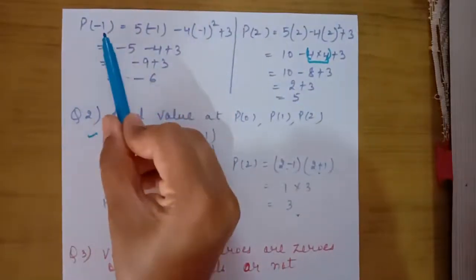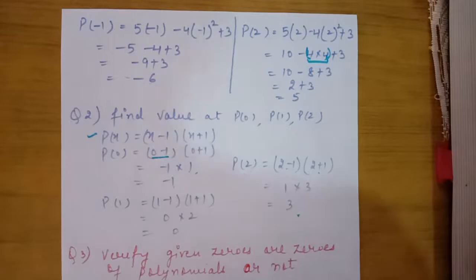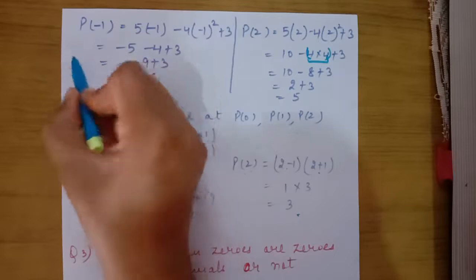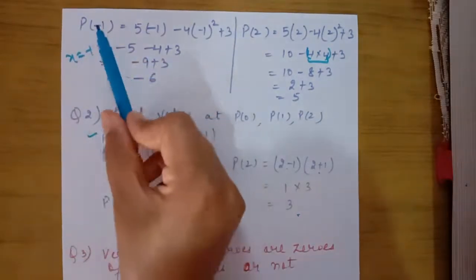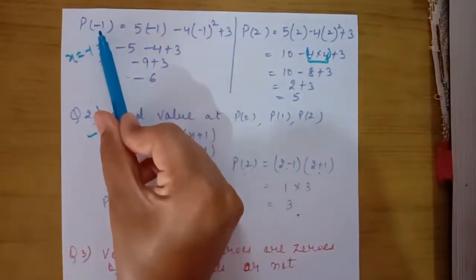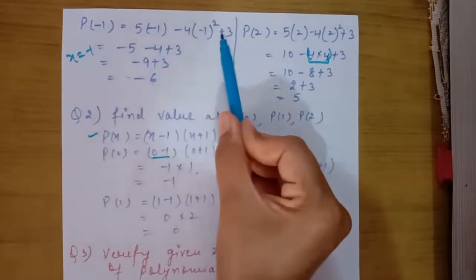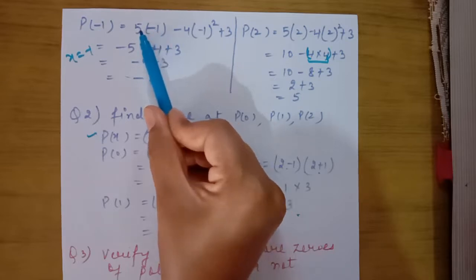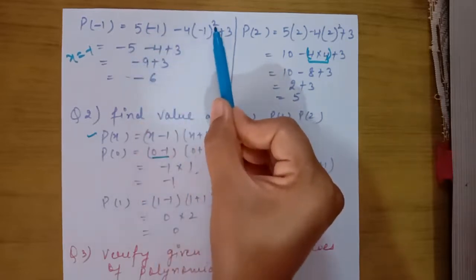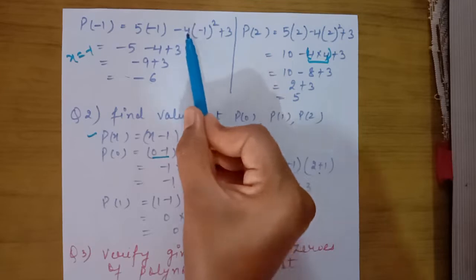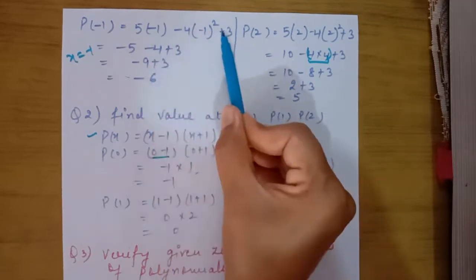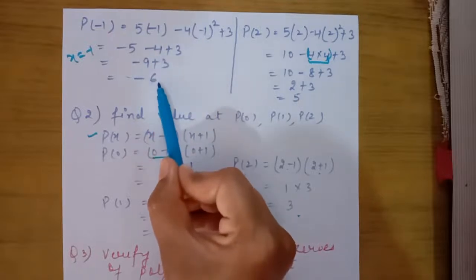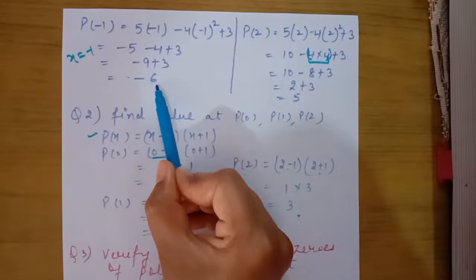In the second part of question 1, we find the value of the polynomial at x equals minus 1. We replace the variable in the complete polynomial with minus 1. So we compute: 5 multiplied by minus 1, minus (minus 1) squared is plus 1, multiplied by 4 is 4, giving minus 4, plus 3. Solving this, we get the answer as minus 6.